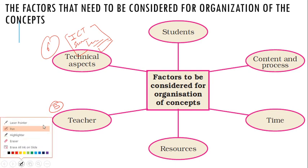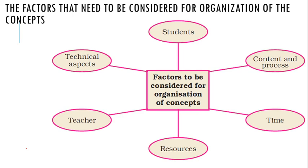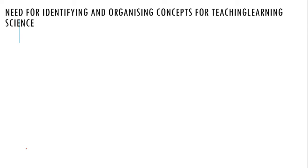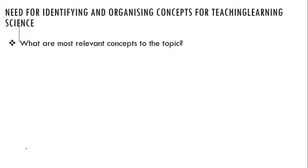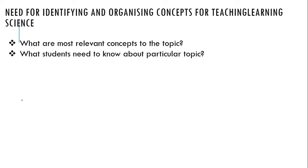Now let's understand the needs of these factors — why we should learn them and why we should consider them. The needs of identifying and organizing concepts for teaching learning of science are: first, to know what are the most relevant concepts to the topic; and second, what the student needs to know about a particular topic. That's why we develop and identify these factors.